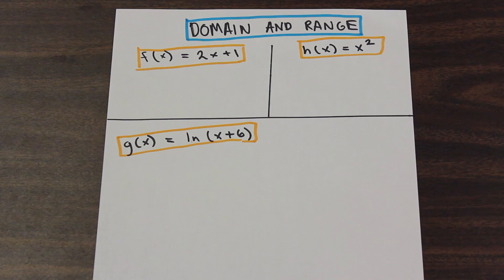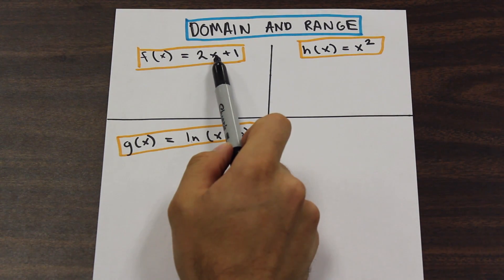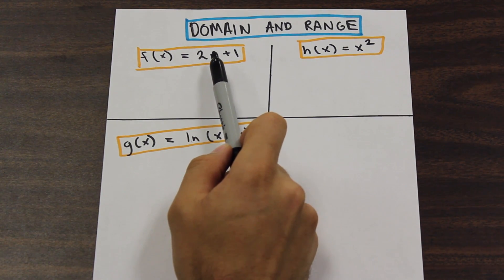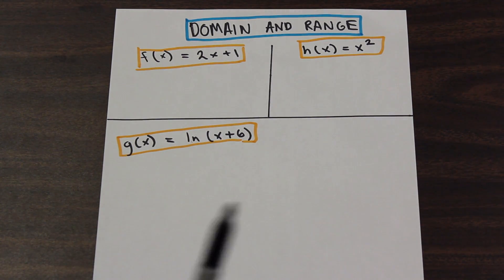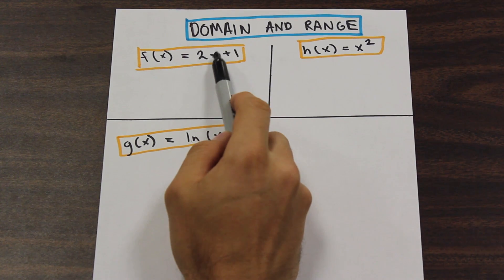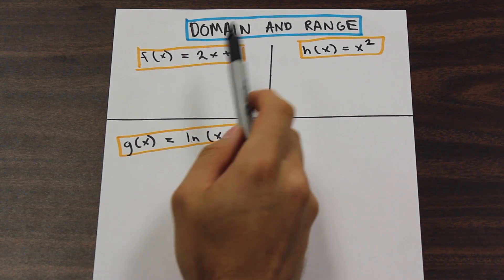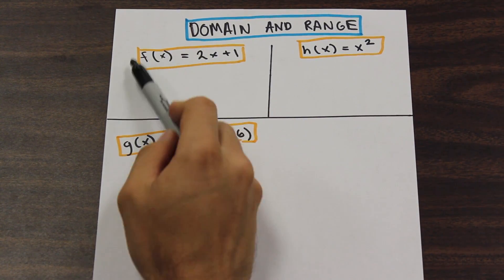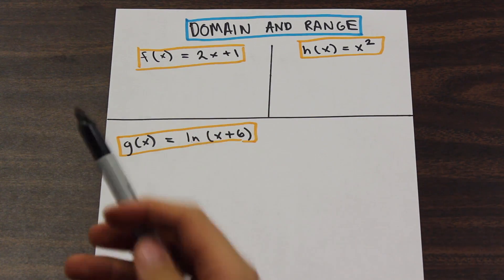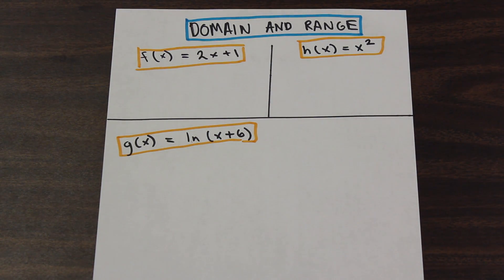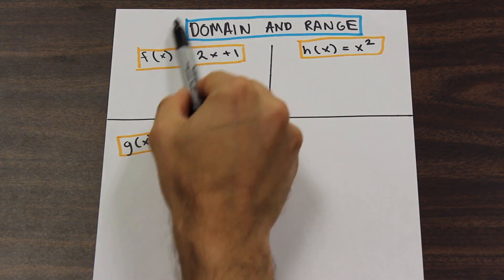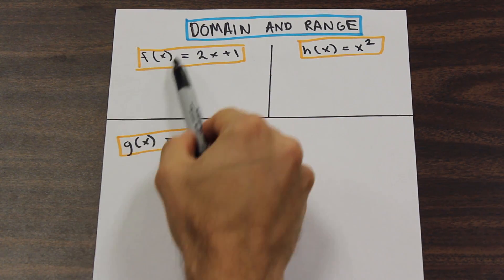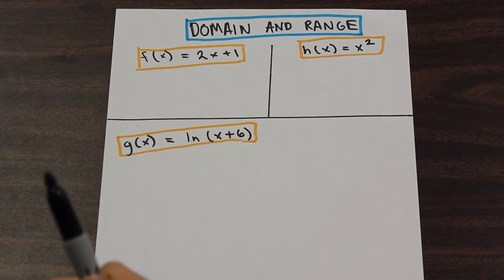The domain essentially means all the valid numbers that you can put into X so that the function is defined. It's the range of numbers that you can put into X, which is the independent variable, which will yield a dependent variable Y value that exists. So it's not undefined, you're not dividing by zero. And the range is, once you've input all of those domain values into X, which values are you going to get out of the function.